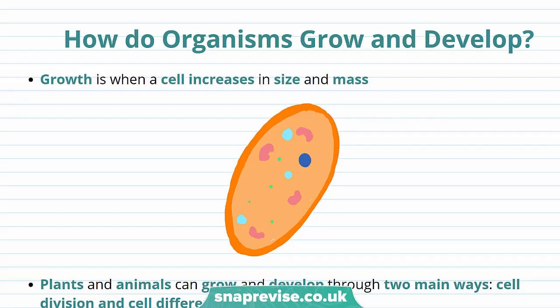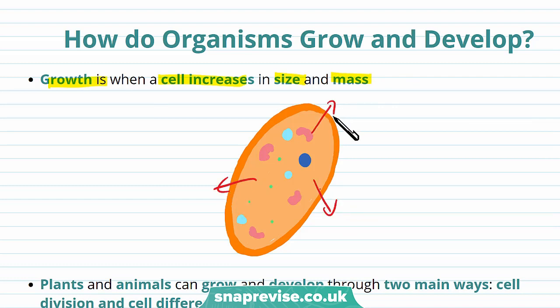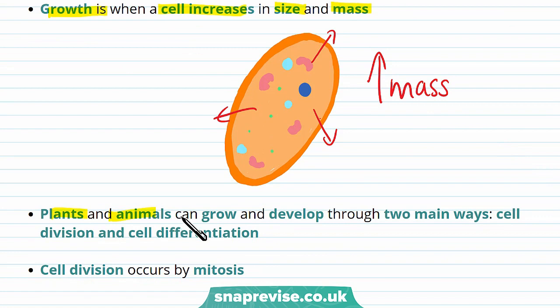So all organisms grow. This includes humans — after birth, humans grow from being babies into adults. Plants also grow; if you think about trees, they start from a small shoot and can grow into huge branching structures. Growth is when a cell increases in size and mass. Plants and animals can grow and develop through two main ways: cell division and cell differentiation.